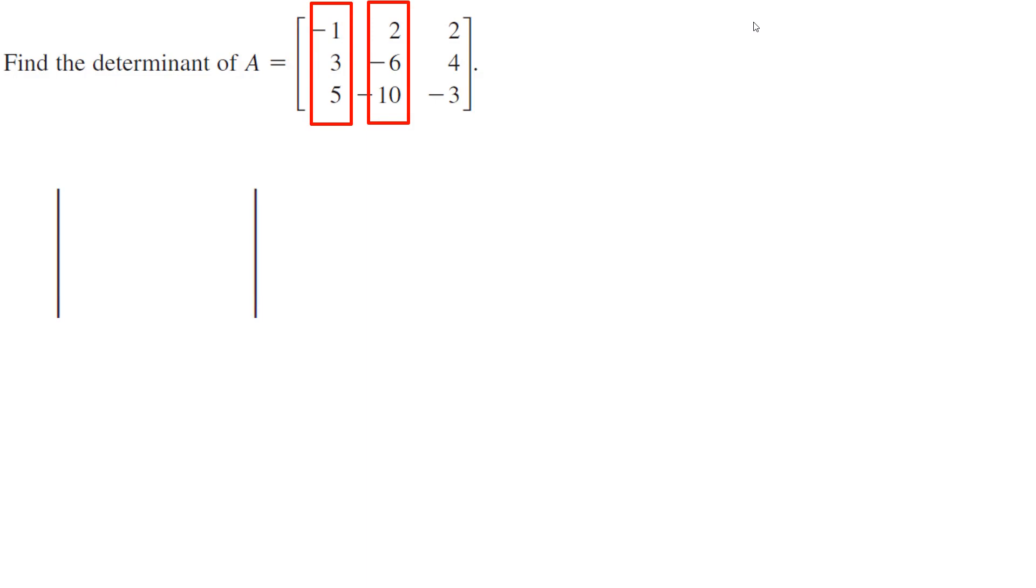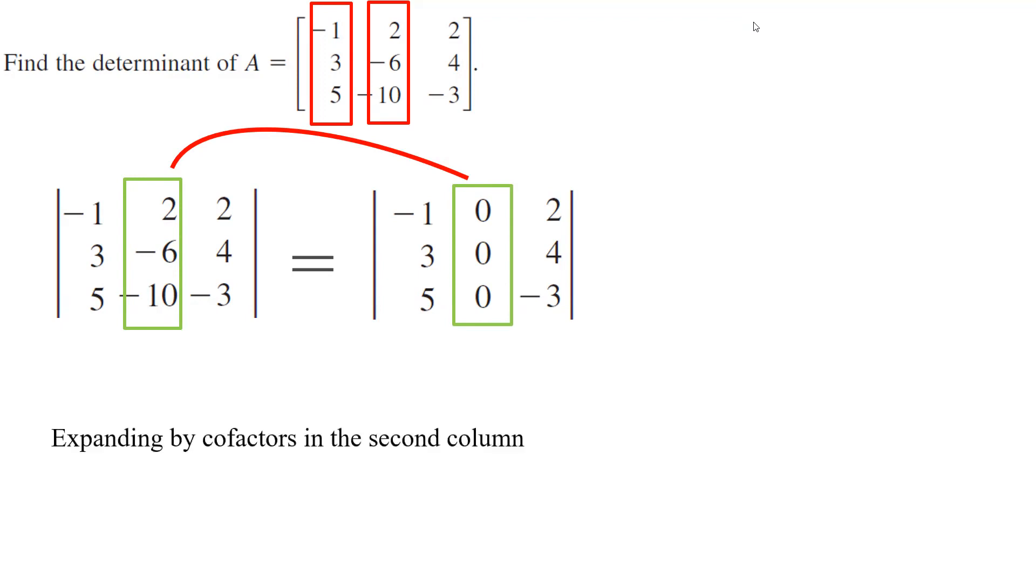So if I ask you to find the determinant of this matrix, you're going to list all three columns. And then you can multiply the first column by 2 and add it to the second column. The first column and the third column stay the same, but the second column becomes zero column. As you can see, you end up with a zero column.